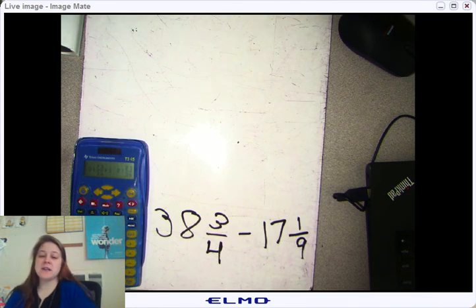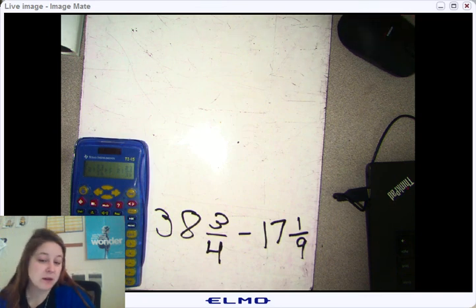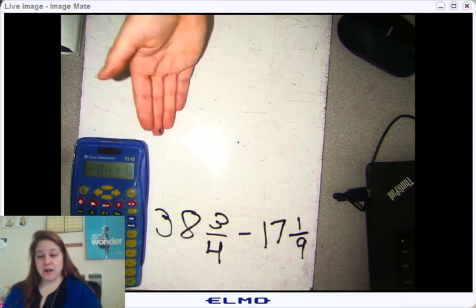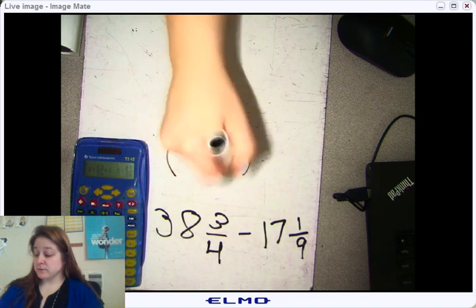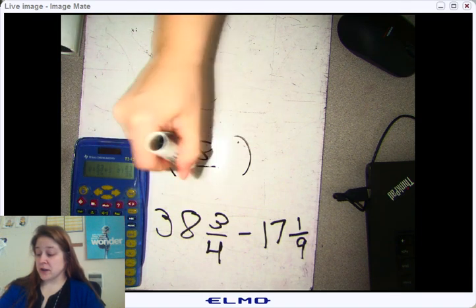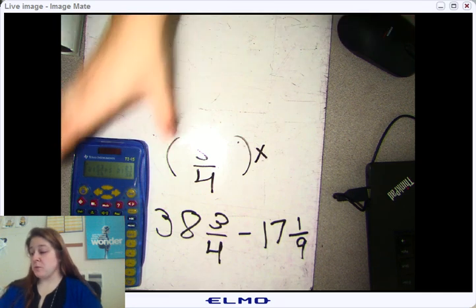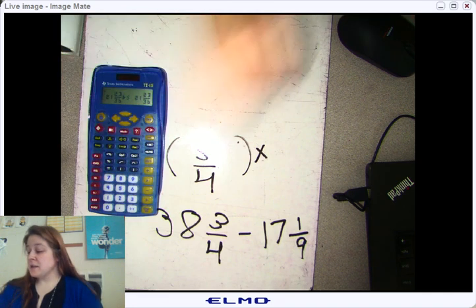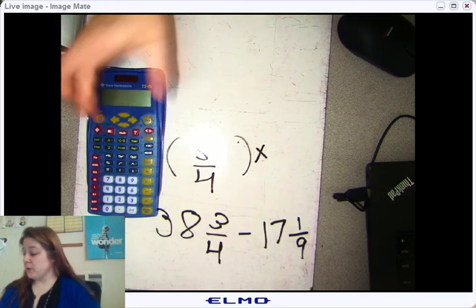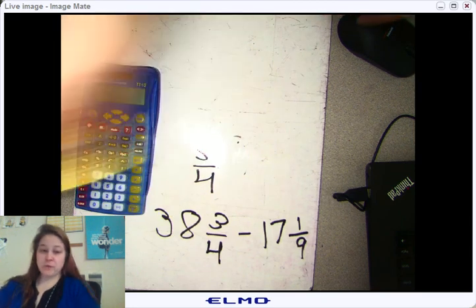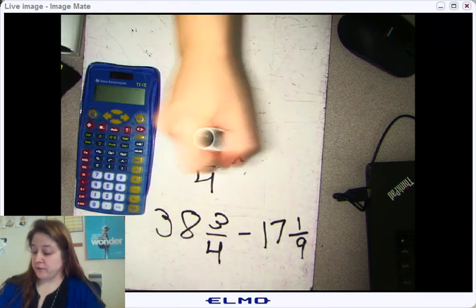You could have done the Butterfly method or Least Common Denominator, but if you have a calculator, why not use it? This might come in handy when you're working on an order of operations problem and you're trying to do three-fourths times a number. You might need to be able to plug this into the calculator.